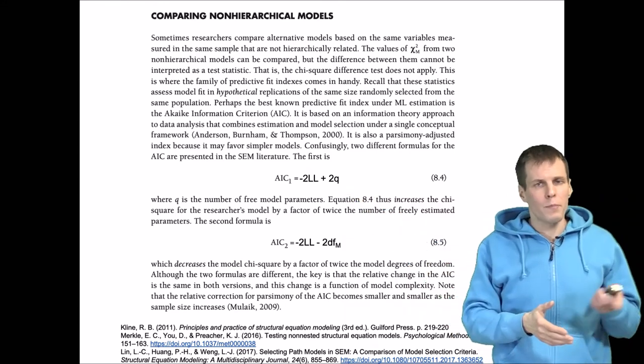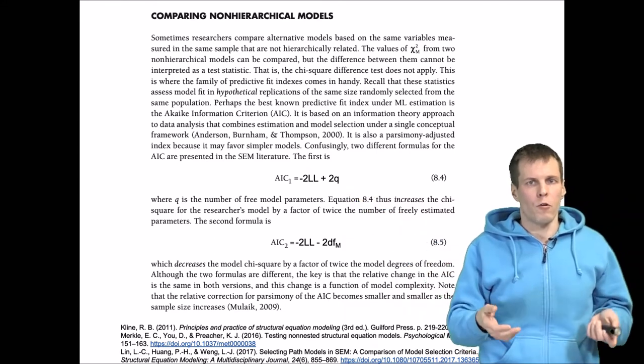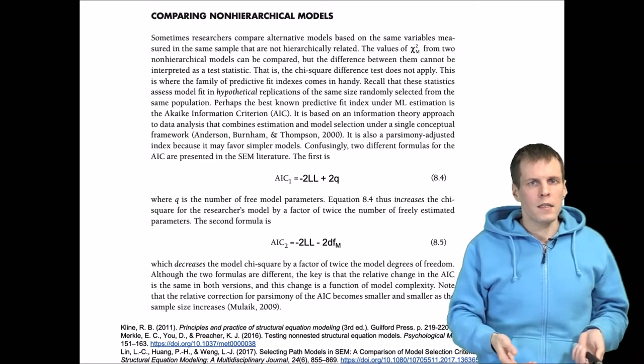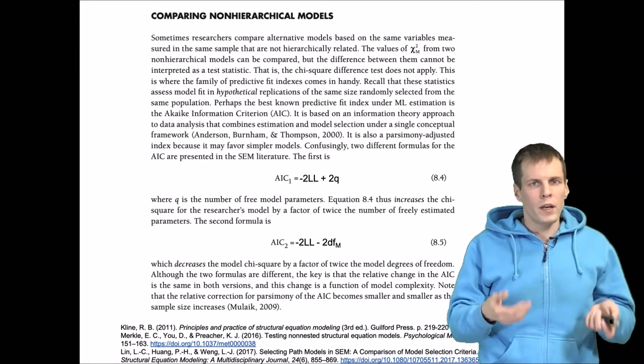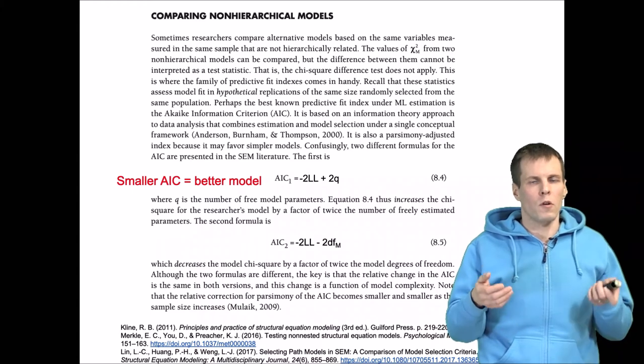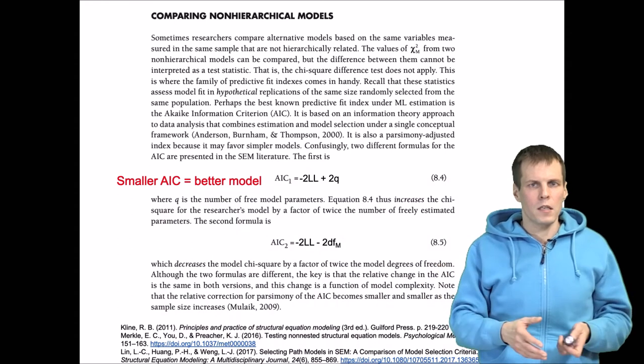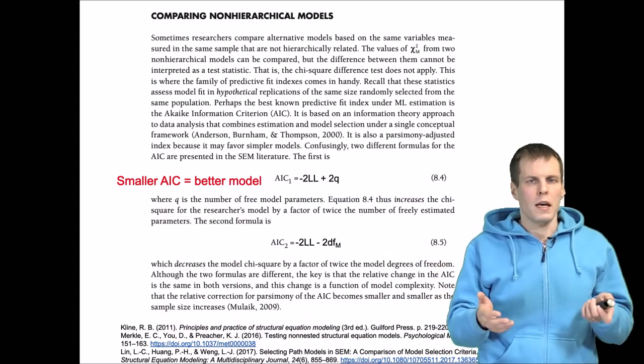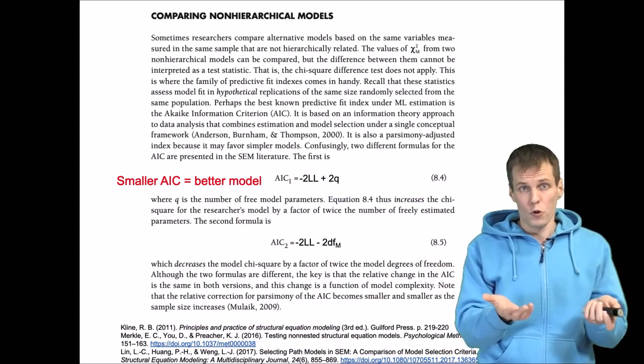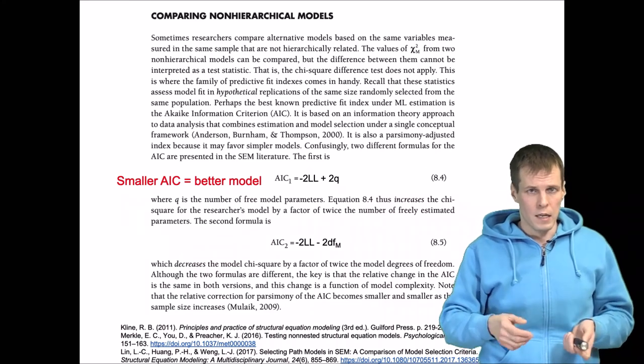With AIC, less is more—smaller AIC is a better model. We calculate AICs for two non-nested models and then we choose the one with the smallest AIC as the better model.